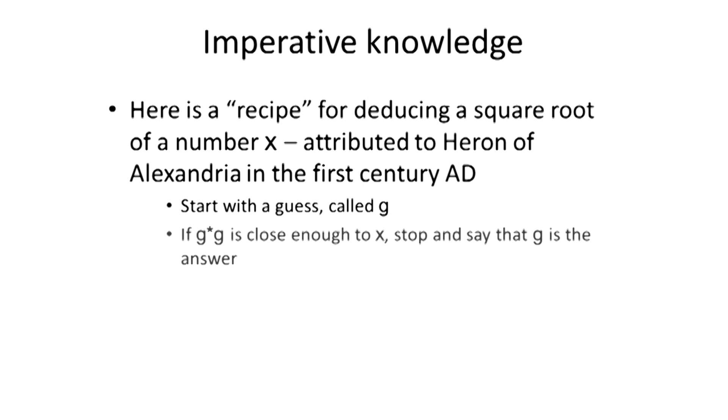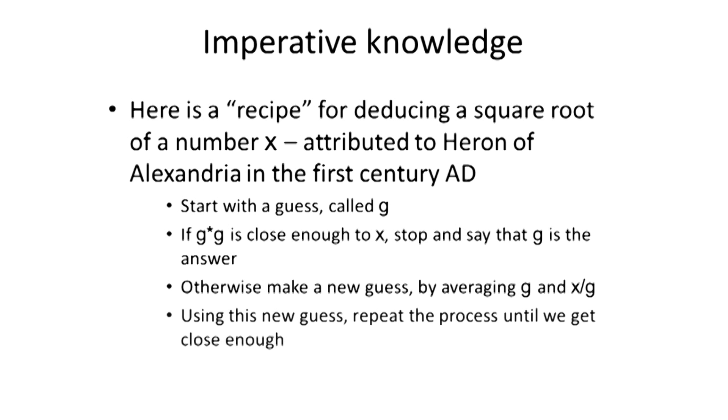I'm going to take g and multiply it by itself, and look if that result is close enough to x. If it is, I'm going to stop and say that g is the answer. Otherwise, I'm going to make a new guess by averaging g and x divided by g. And using this new guess, which I'll call g again, I'm going to repeat the process until we get something that's close enough.